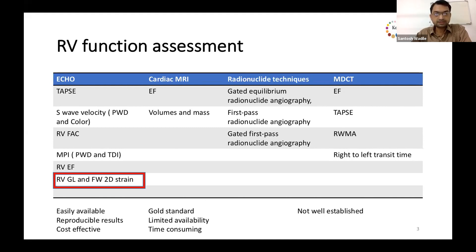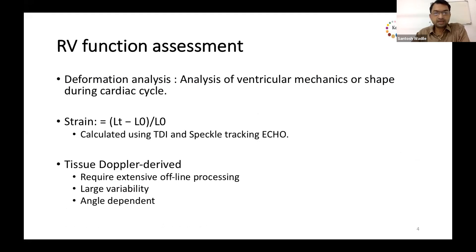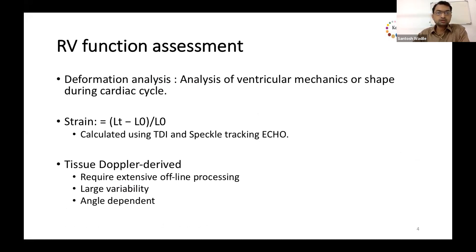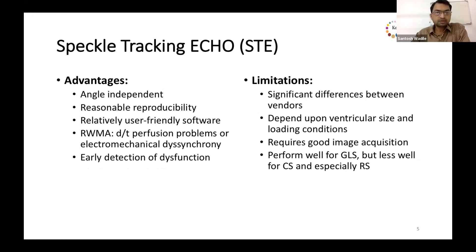Strain is basically a deformation analysis — the analysis of ventricular shape during the cardiac cycle. It can be calculated using tissue Doppler and speckle tracking echocardiography. However, tissue Doppler-derived strain has limitations: it requires offline processing, has large variability, and is angle-dependent.